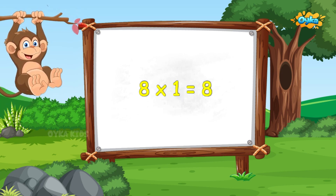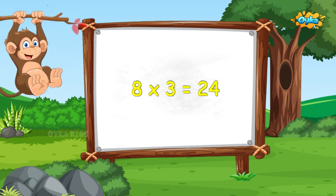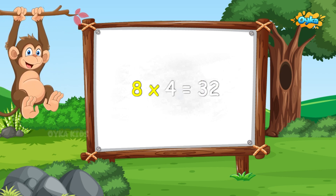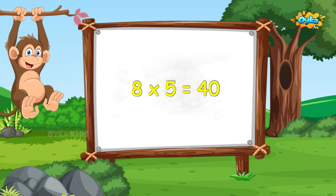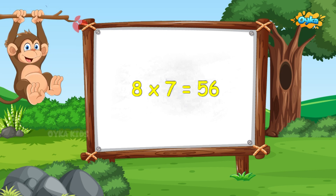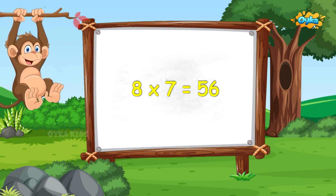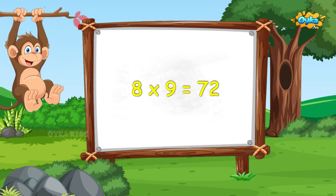8 1s are 8, 8 2s are 16, 8 2s are 16, 8 3s are 24, 8 3s are 24, 8 4s are 32, 8 4s are 32, 8 5s are 40, 8 5s are 40, 8 6s are 48, 8 6s are 48, 8 7s are 56, 8 7s are 56, 8 8s are 64, 8 8s are 64, 8 9s are 72, 8 9s are 72, 8 10s are 80.